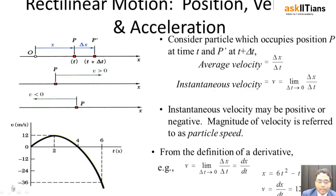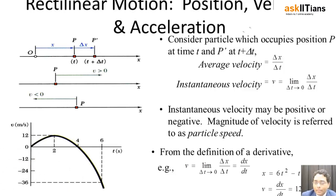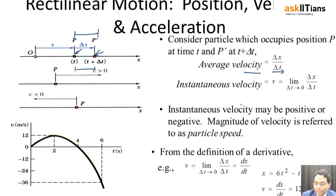If we consider a particle starting from point P, at any instant of time it occupies position P, and after some increment of time delta t, it is at a new position P prime. The average velocity is equal to the total distance covered in that time interval — that is delta x divided by delta t.